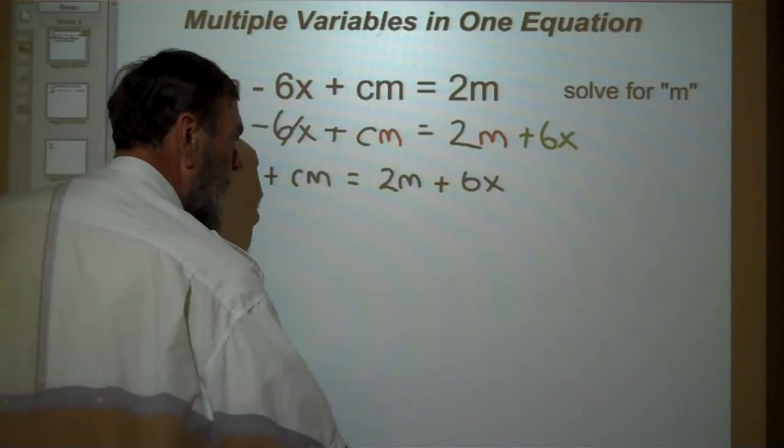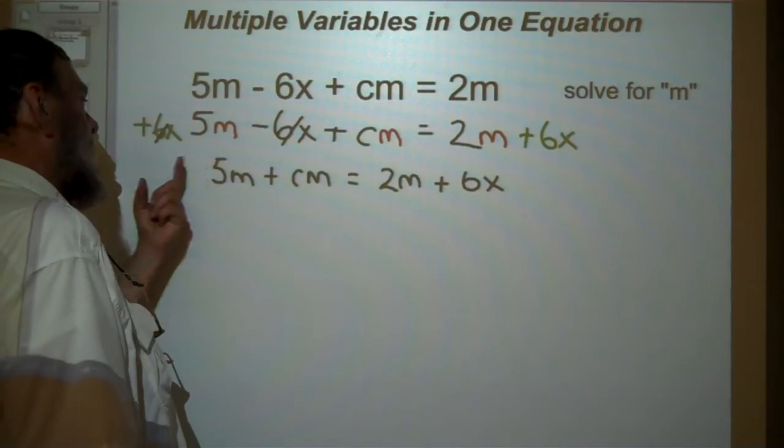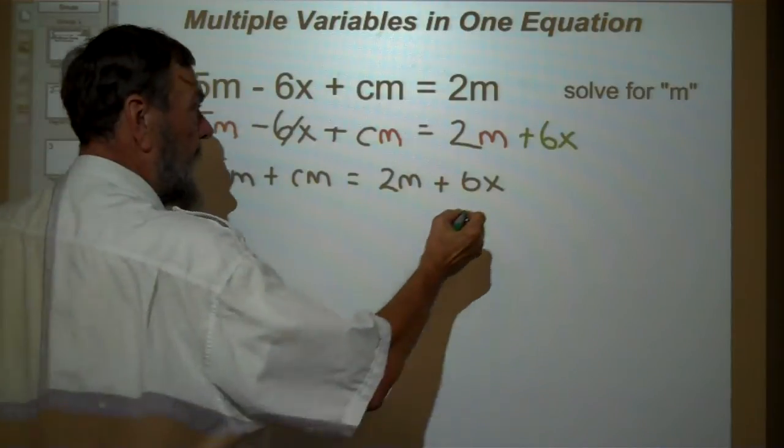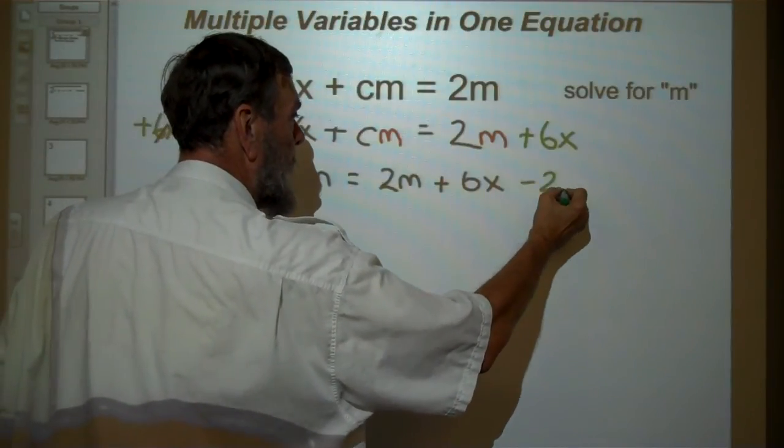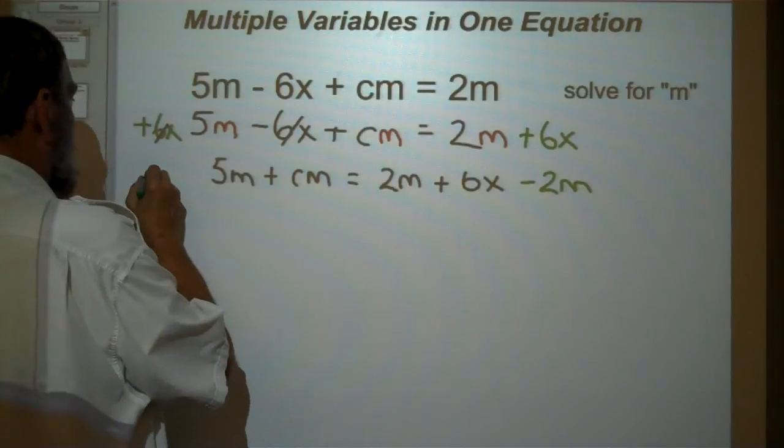Now what? Well, here's an m. We want it now on the other side. So what do we do? We subtract 2m from either side.